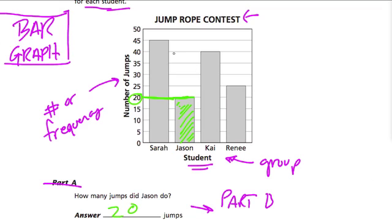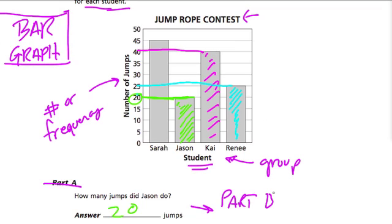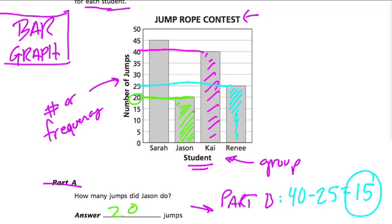For Kai, if you follow up on the bar and read over, you can see that it hits 40. So Kai jumped 40 times. What about Renee? Here's Renee's bar — if you follow it over to the left, we get 25. So to find out how much more Kai jumped than Renee, we use subtraction: 40 minus 25, and that's just 15. So Kai jumped 15 more times than Renee.